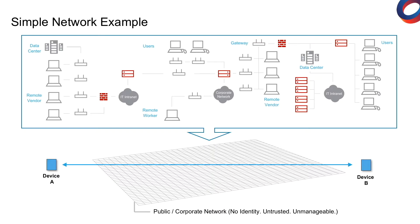Device A is in a remote location and device B is located on-premise at headquarters, and they are connecting back over a shared network infrastructure. Similar to Google's initiative BeyondCorp, we also tend to take the basic view that any network we're going over is essentially unsecure.